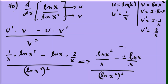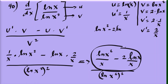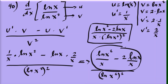Combining the numerator: that's (natural log of x squared minus 2 natural log of x) all over x. Then dividing by the denominator (natural log of x squared) squared gives the final result: (natural log of x squared minus 2 natural log of x) over x times (natural log of x squared) squared.